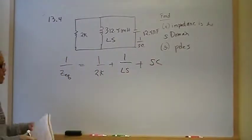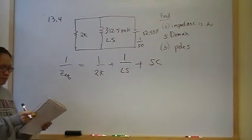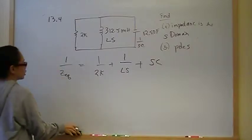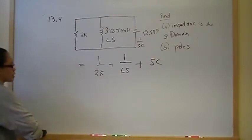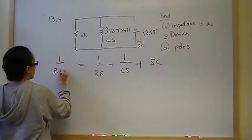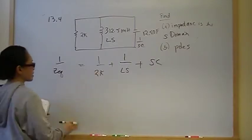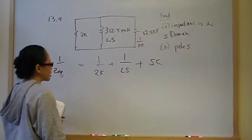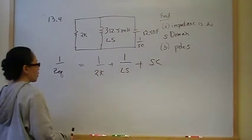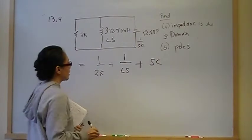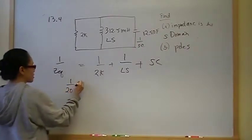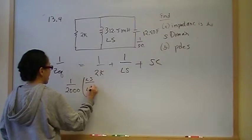Now we need to combine things, and this part is ugly math. Going back to seventh-grade algebra — when you add fractions, everything needs a common denominator. The least common denominator is 2000 times LS. So the term 1 over 2000 needs an LS over LS multiplier, and 1 over LS is missing a 2000.